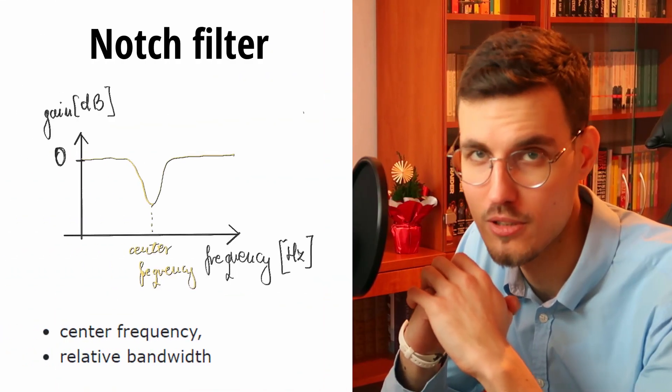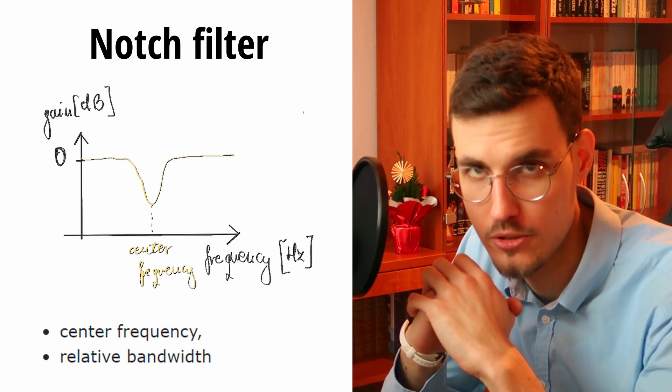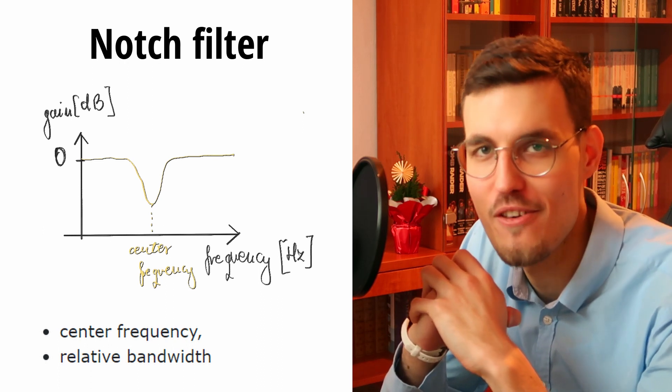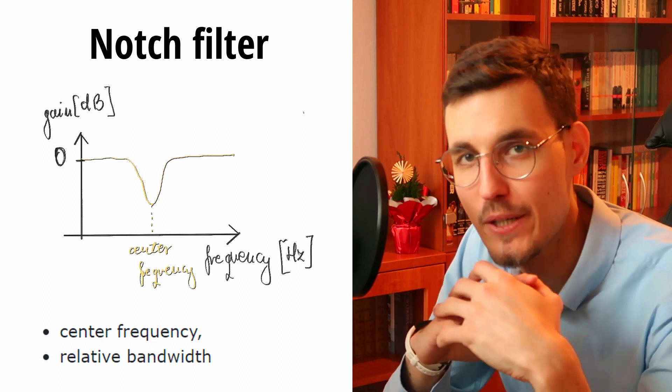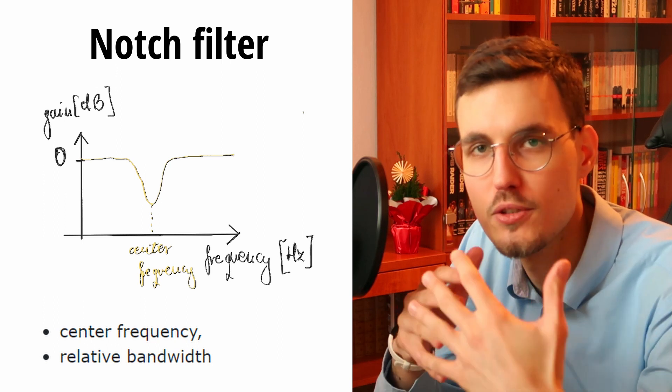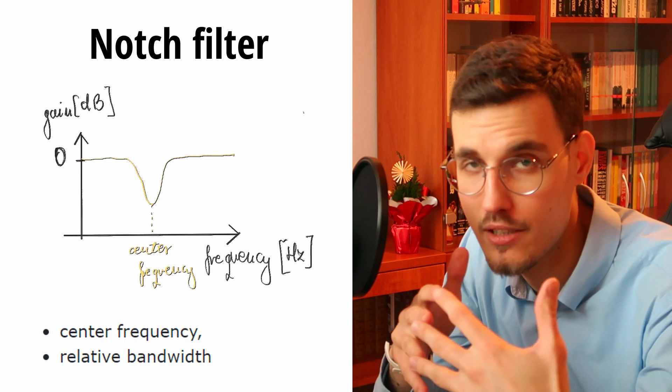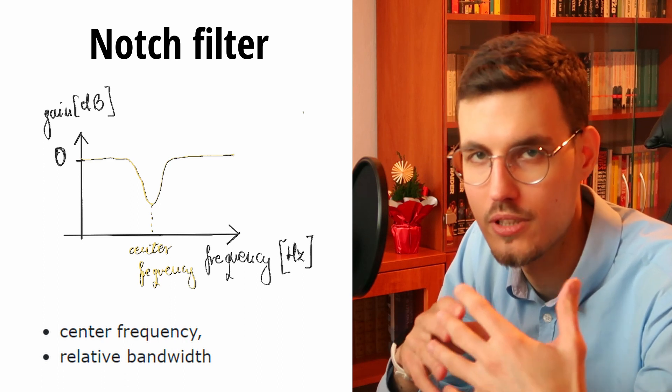A notch filter, also called a bandstop or bandreject filter, does the opposite of the bandpass filter. It attenuates frequencies in a certain frequency range. Again, its two parameters are the center frequency and the bandwidth. Here's how a notch filter sounds.